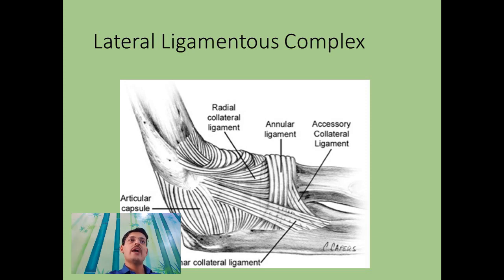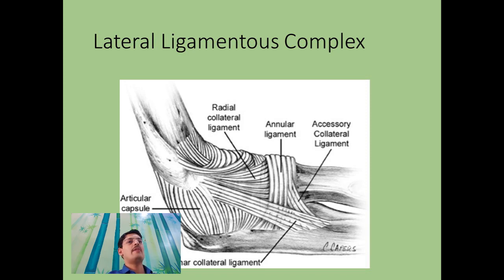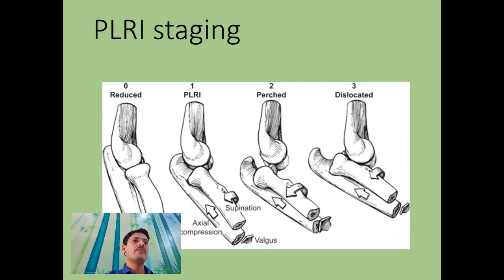The lateral ulnar collateral ligament is not a restraint to varus instability — that is an important concept. The primary restraint to varus instability is the ulnohumeral articulation, not the lateral ligaments. The lateral ligaments are weaker than the medial side, so when there is an elbow dislocation, the pattern of injury starts from the lateral side, proceeds to the anterior tissue, and in terrible triad involves lateral ligament injury, radial head fractures, anterior capsule, coronoid fractures, and only very occasionally the MCL.